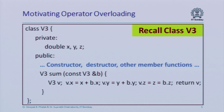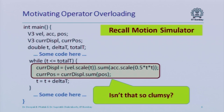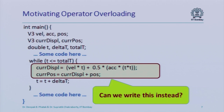To motivate this, think about the class V3 that we have studied. We had defined a member function called sum which could take another object of class V3 by reference, add the x, y, and z components, and return an object of class V3. We had used this in the motion simulator program to do something like u*t plus half*a*t squared. But this is a very clumsy way of doing that, invoking dot member function name all over.